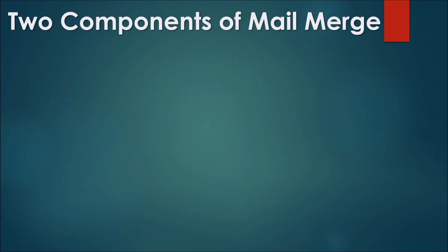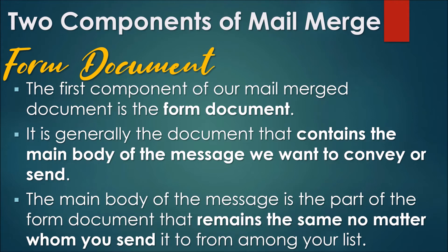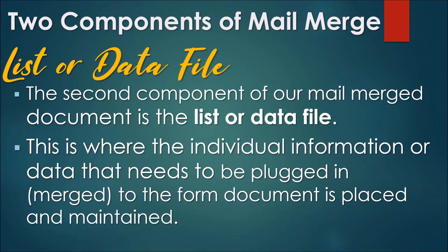There are 2 components of Mail Merge. The first component is the Form Document. It is generally the document that contains the main body of the message we want to convey or send. The main body of the message is the part of the form document that remains the same no matter whom you send it to from among your lists.